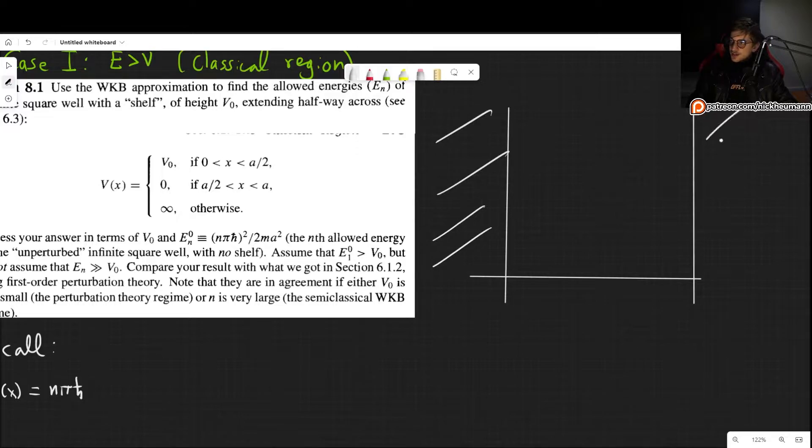All of this is forbidden. The potential is infinite, but in the middle now we have some V0 only up to A over 2. So the square well goes all the way from 0 to A, but the potential only goes from 0 until A over 2.